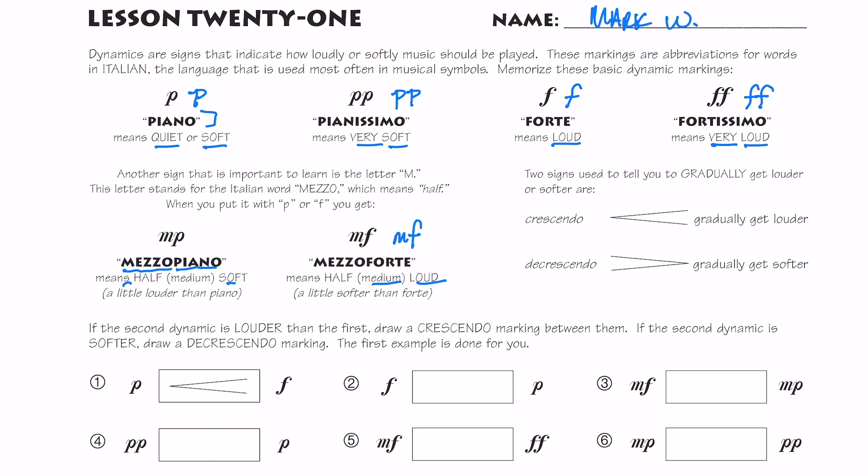Now, two notation symbols that tell you to gradually get louder or gradually get softer are the crescendo. And you're going to see this with long parallel lines, not parallel, long lines that almost look like a greater than sign. So I'm getting louder and louder or a decrescendo. Another way of writing that is called a diminuendo. Diminuendo means to gradually get softer.